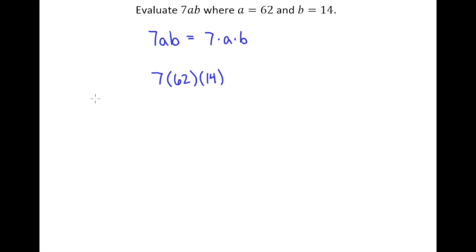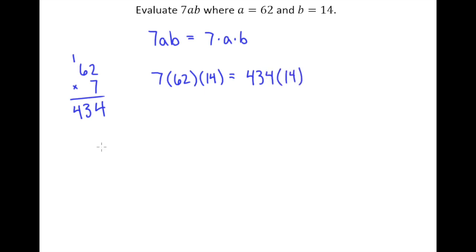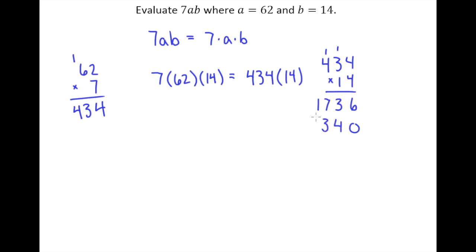I'll go ahead and multiply 62 and 7 first, and I get 434. So that's 434 times 14. Working that out: 434 times 14 — 6, then 12 plus 1 is 13, 16 plus 1 is 17, put a 0 down as a placeholder, then 434. Adding those together: 6, 7, 10, and 6 — so the answer is 6076.